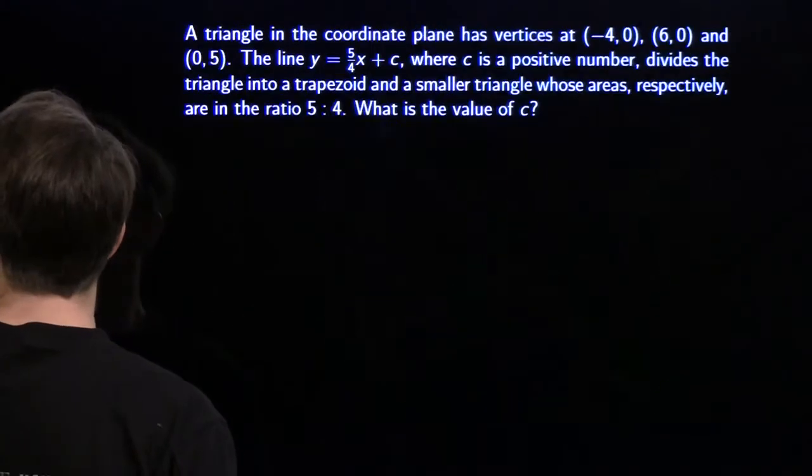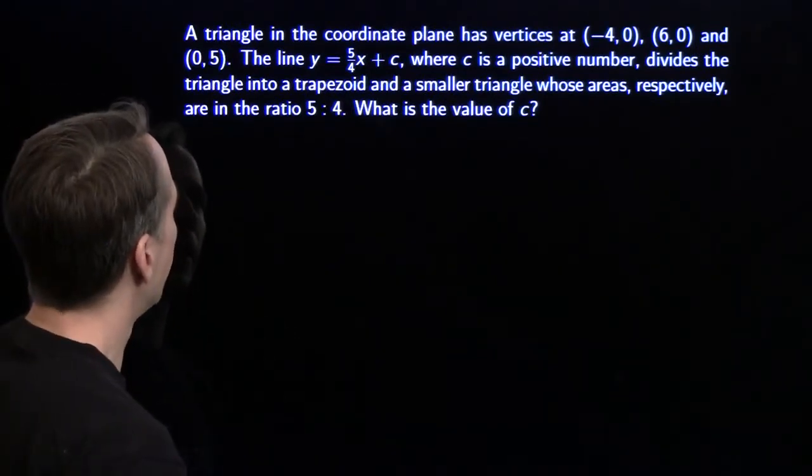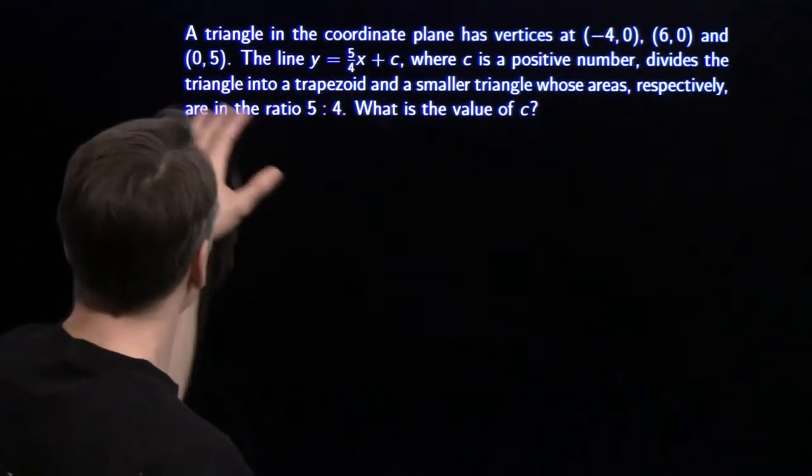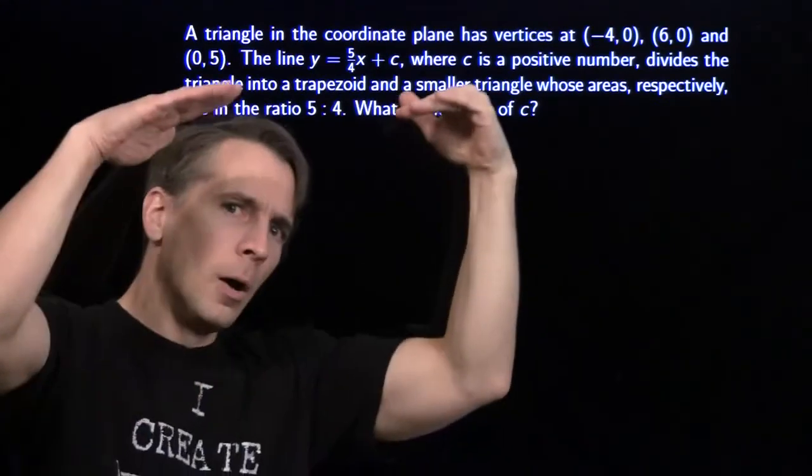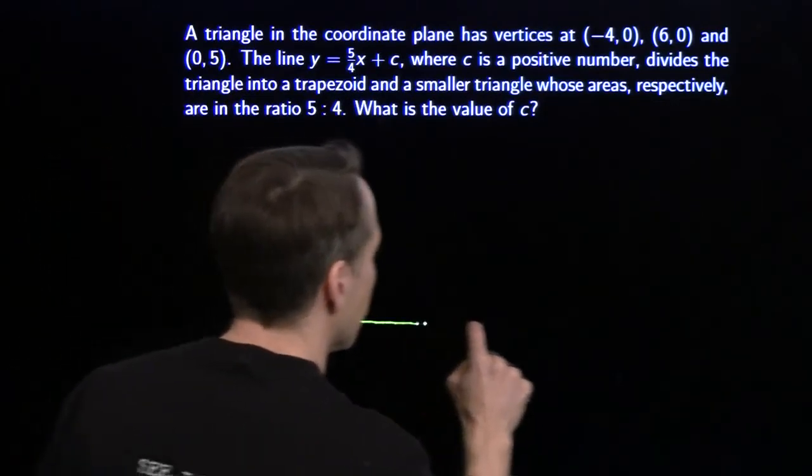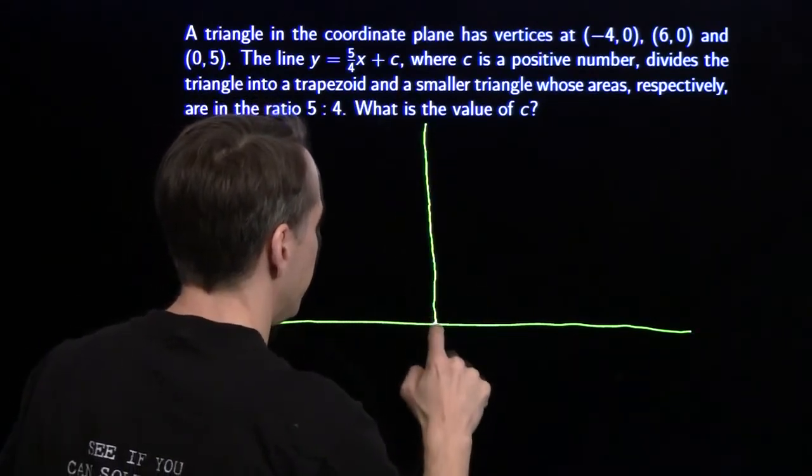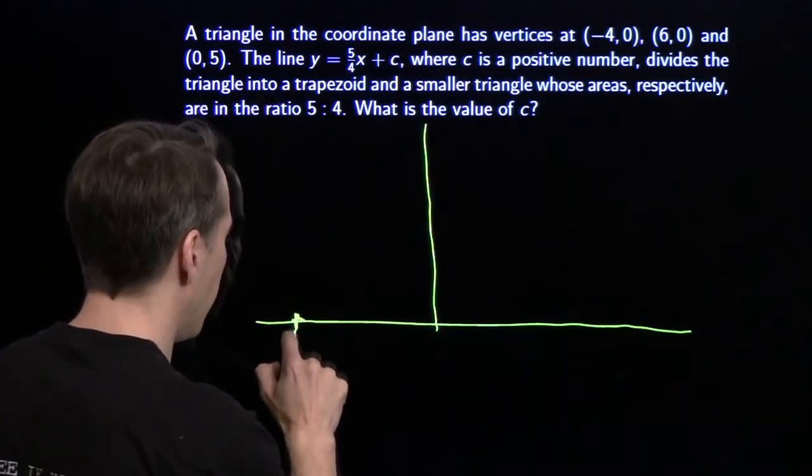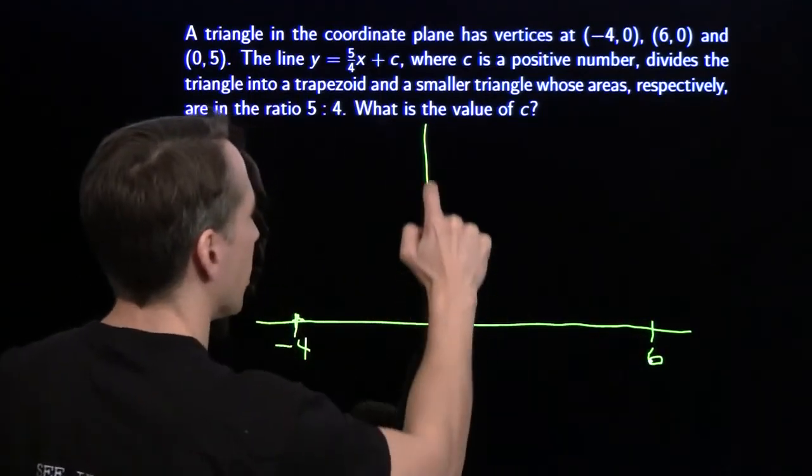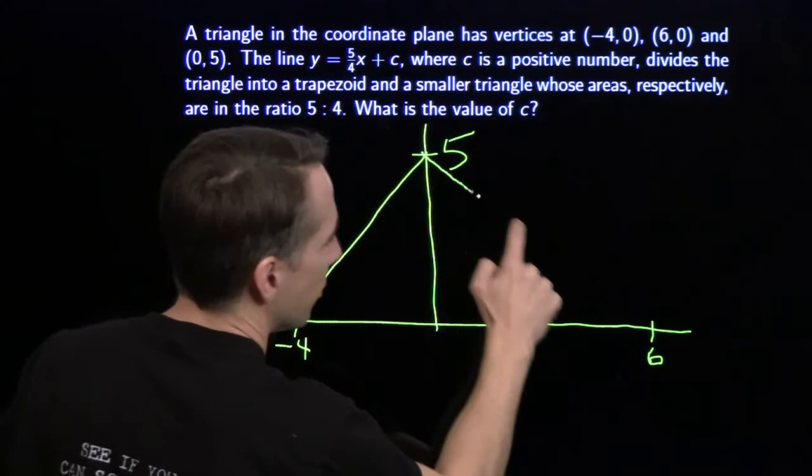Geometry problem. Very slick, Harvey. Let's try another one. Alright. I've got a triangle in the coordinate plane with vertices negative 4, 0, 6, 0, and 0, 5. So the last problem, all the action was below the x-axis. This one, all the action is going to be above the x-axis, so we're going to draw the x-axis down here. And we want negative 4 back here, 6 over here. We're going to go up to 5. And there's my triangle.